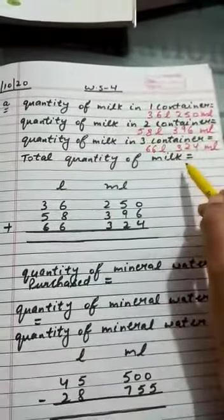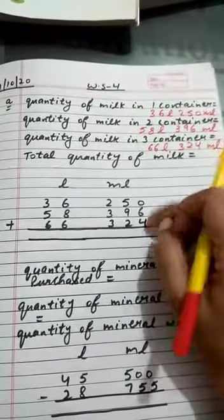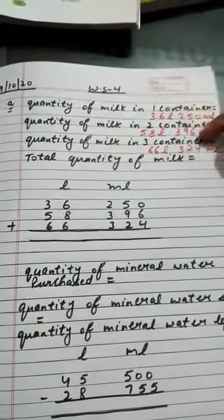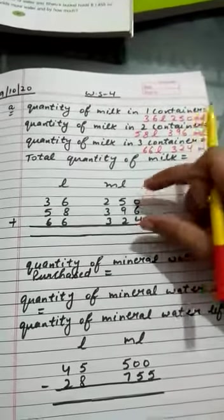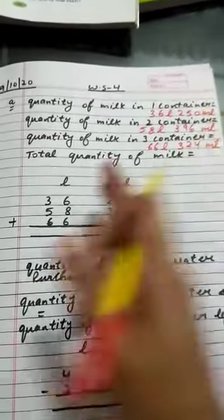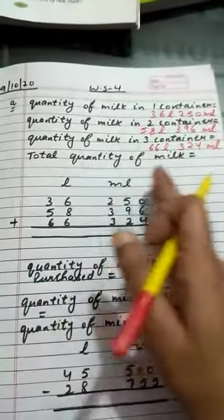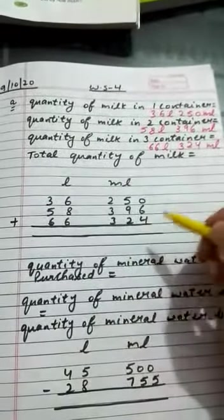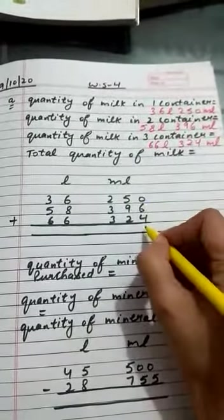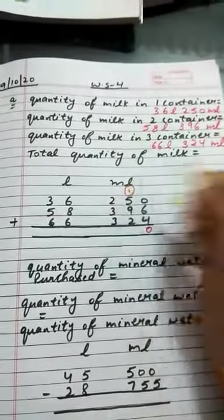Total quantity of milk कितनी है? अब सबको हम क्या कर देंगे? Add कर देंगे. We have to add these quantities. You know how to do addition. We'll write the liter part separately. 6 plus 4 is 10, so carry 1.